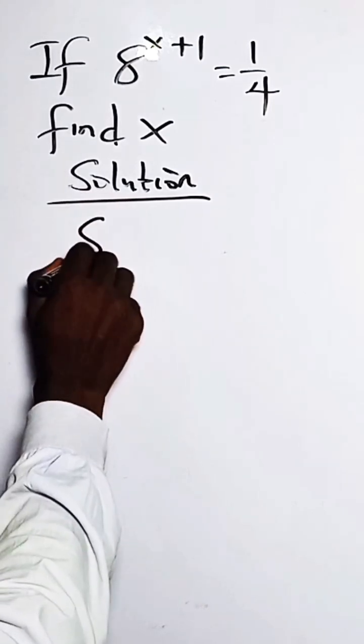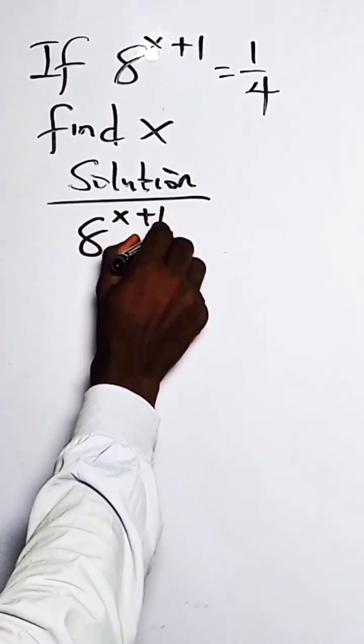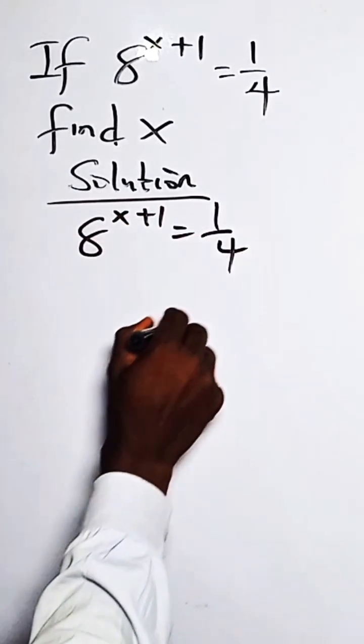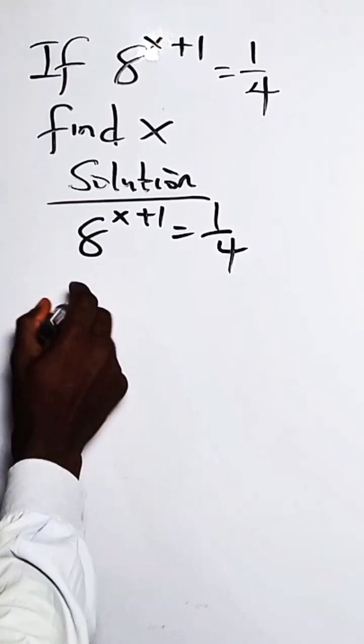So we have 8 to the power x plus 1 equals 1 over 4. Let's write 8 in index form.